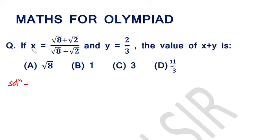If x is equal to square root of 8 plus square root of 2 over square root of 8 minus square root of 2, and y is equal to 2 over 3, the value of x plus y is: option 1: square root of 8, option 2: 1, option 3: 3, option 4: 11 over 3. We have to calculate the value of x plus y.